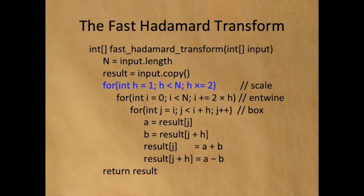The outer loop processes each scale. The middle loop processes each entwining within a scale. And the inner loop processes each box within an entwining. We call the four assignments the box.